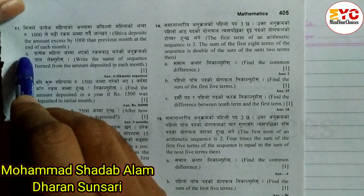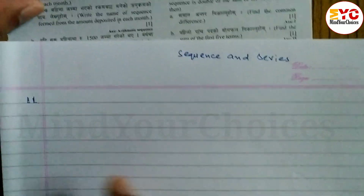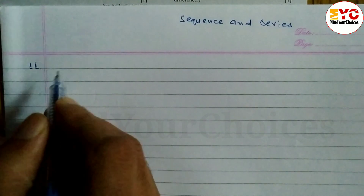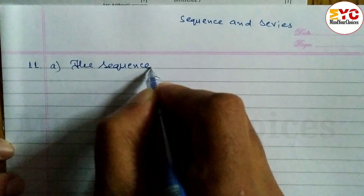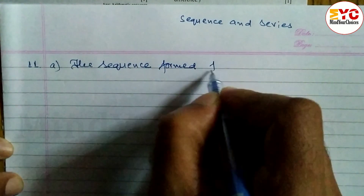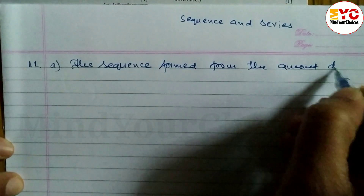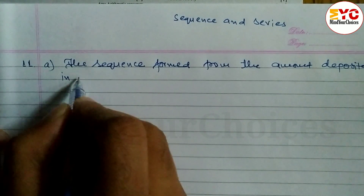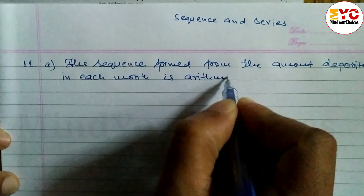A is the name of the sequence formed from the amount deposited in each month. You can see here — every month the difference is constant. The amount deposited in each month increases, so the sequence formed from the amount deposited in each month is an arithmetic sequence.